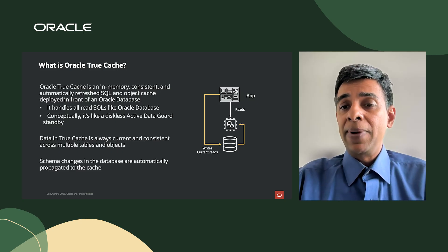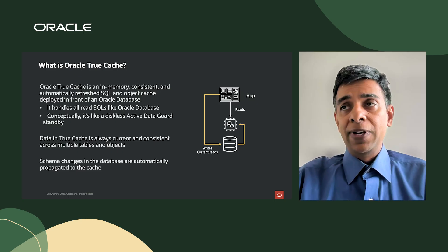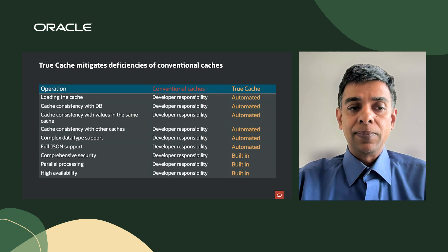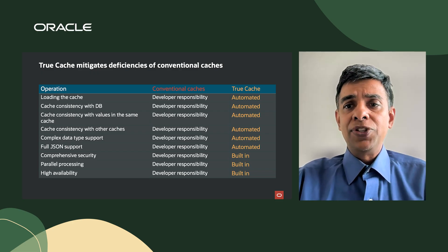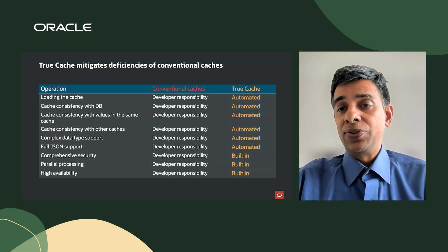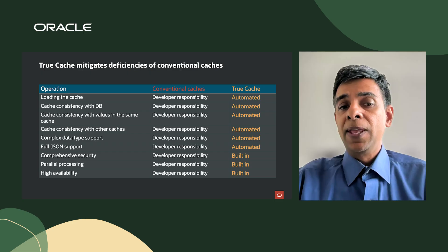Data in True Cache is always current and consistent across multiple tables and objects — already taken care of for you, sparing developers from that complex responsibility. Schema changes in the database are also automatically propagated to the cache. True Cache mitigates the deficiencies of conventional caches: cache consistency, complex data type support, full JSON support, comprehensive security, parallel processing, and high availability are all inbuilt. You get all of this for free with Oracle True Cache.